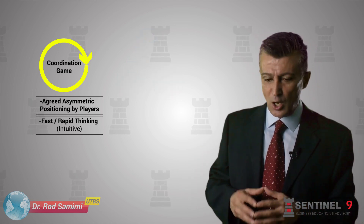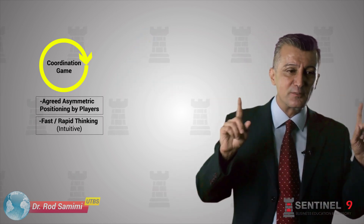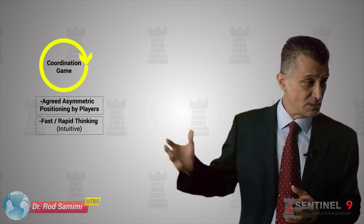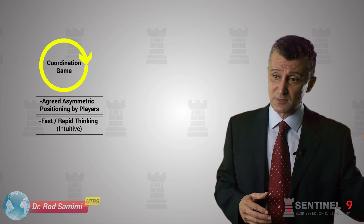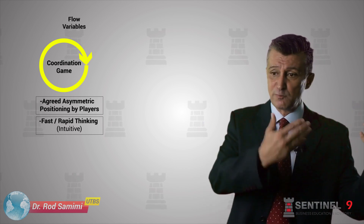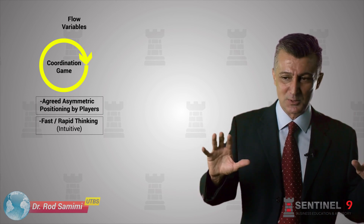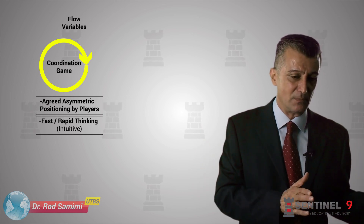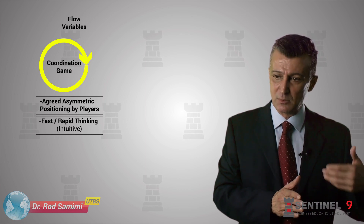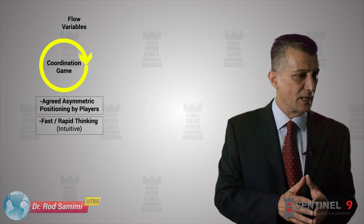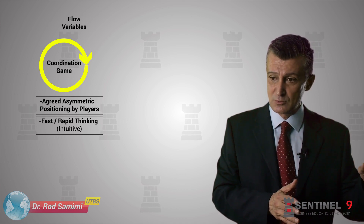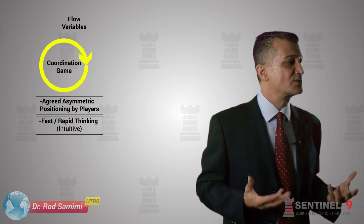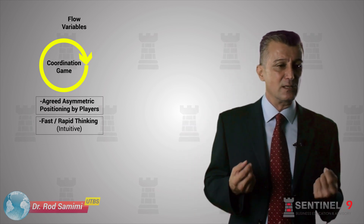Coordination games are played with an intuitive thought process. The literature — Nobel Prize winners — has said that fast thinking, intuitive thinking, flow variables, and asymmetric positioning resolve the coordination game. We will come back to this axiom of fast thinking, flow variables, and coordination games in later modules. For the purpose of this, please consider this type of game theoretic concept: a coordination game is resolved by asymmetric positioning of the players.